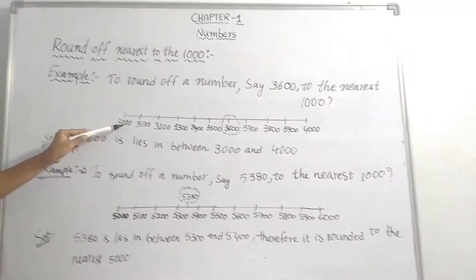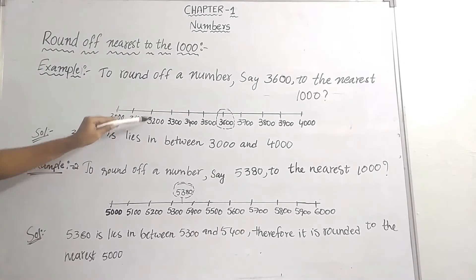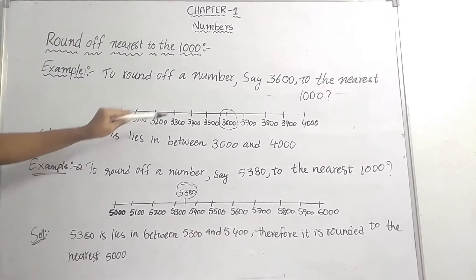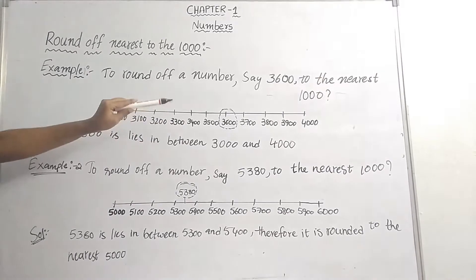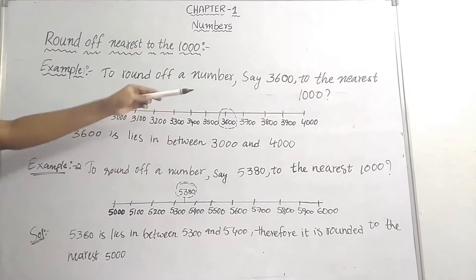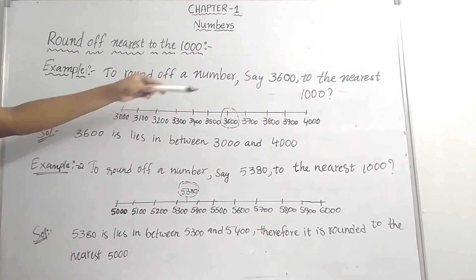So 3000, 3100, 3200, 3300, 3400, 3500, 3600, 3700, 3800, 3900, and 4000.